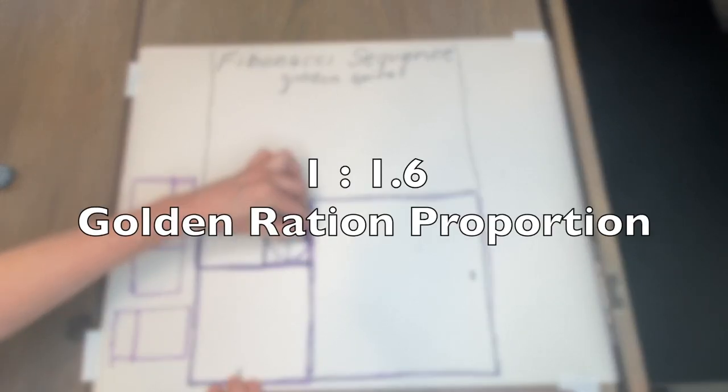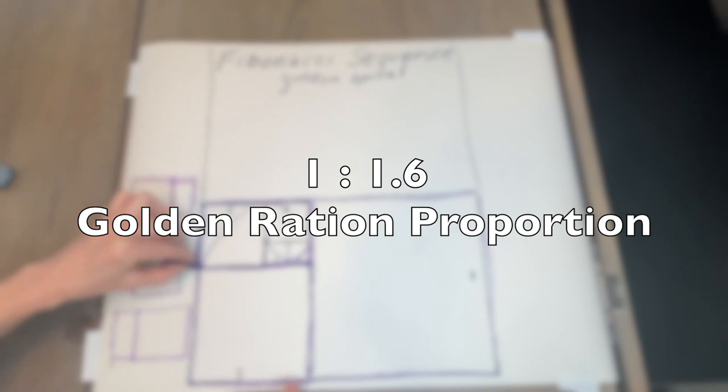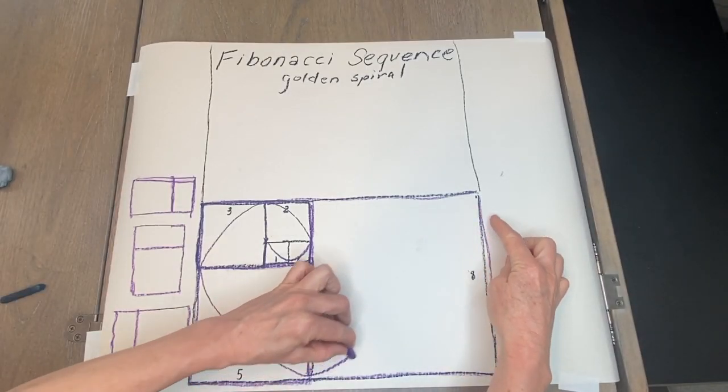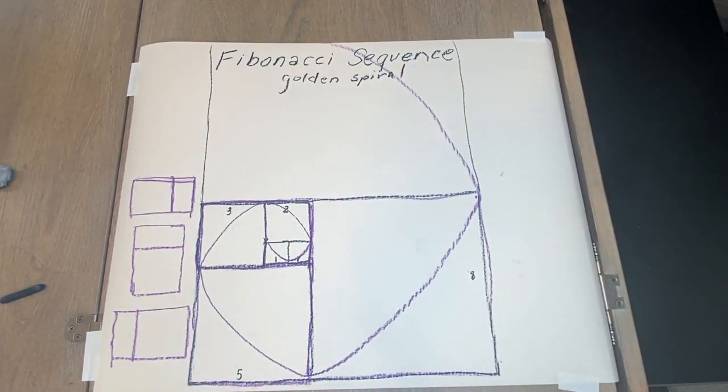The exact proportion is 1 to 1.6. And the golden spiral that is also found so much in nature can also be drawn within the diagram.